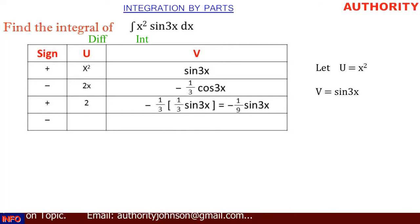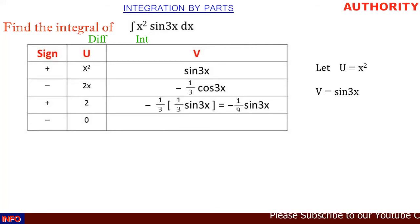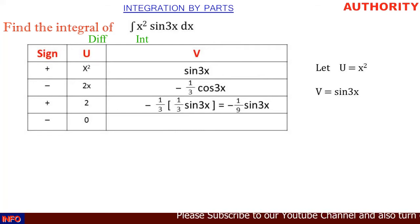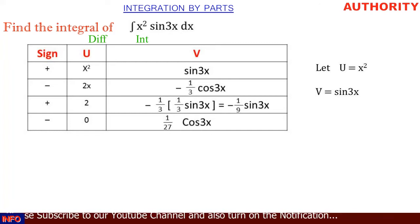Differentiating 2 under u gives us 0, so we can stop here. We now integrate minus 1 over 9 sine 3x: taking 1 over 9 outside, the integral of sine 3x gives minus 1 over 3 cos 3x, so minus 1 over 3 times minus 1 over 9 gives us positive 1 over 27 cos 3x.